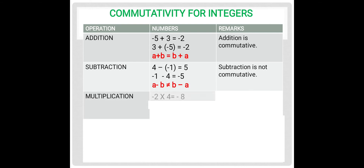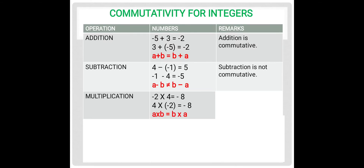For multiplication, let us multiply two integers. Negative 2 multiplied by 4 gives the answer negative 8. Let us change the order: 4 multiplied by negative 2 is also negative 8. So the order of the numbers does not matter for multiplication. So a multiplied by b equals b multiplied by a. Hence, we can conclude multiplication is commutative.